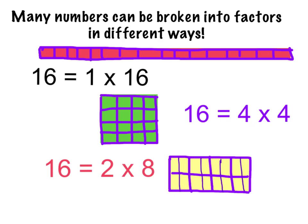So let's look at this slide right here. This says many numbers can be broken into factors in different ways. If I had the number 16, it has a lot of factors. The factors for 16 are 1 times 16. If you look at this array right here, you can see that I have 1 row, and I have 16 units going across. This means that I have 16 altogether, counting 1 through 16.